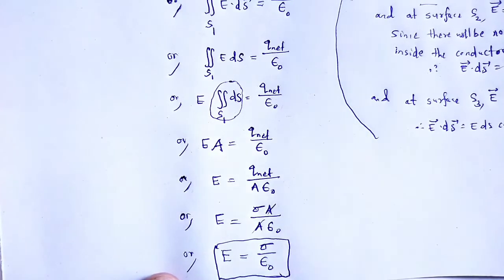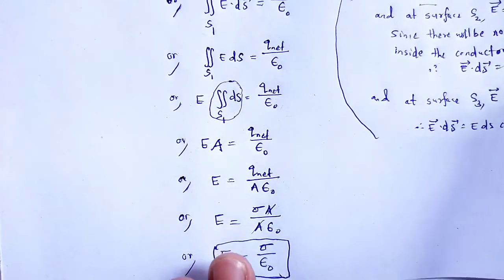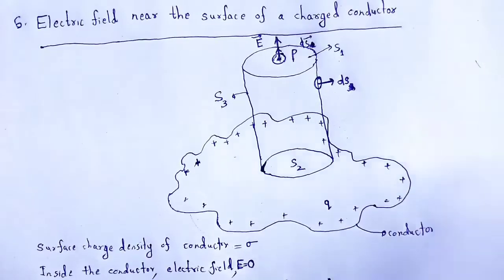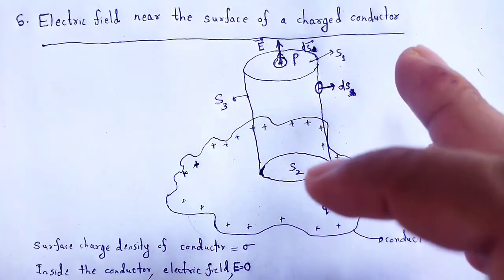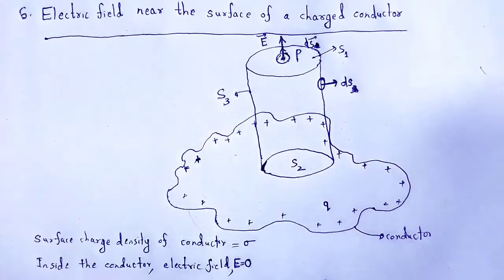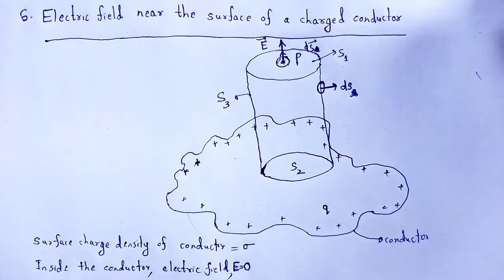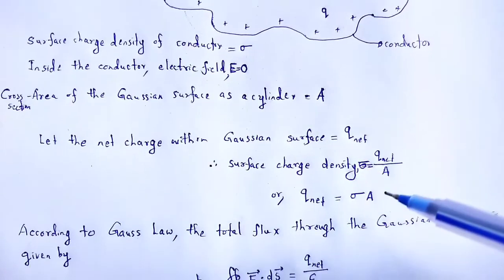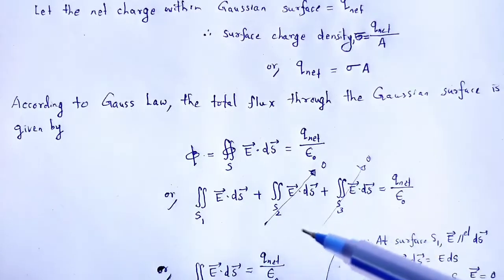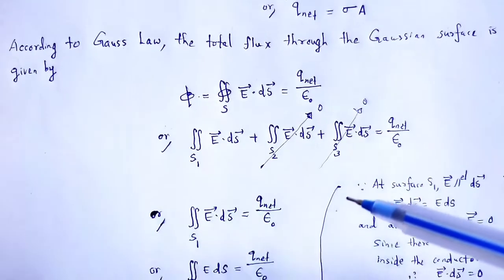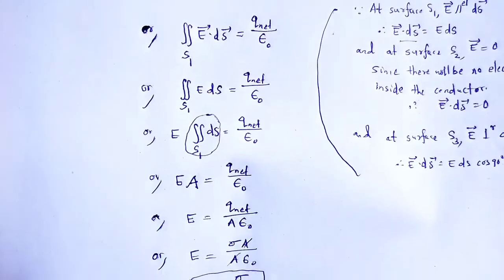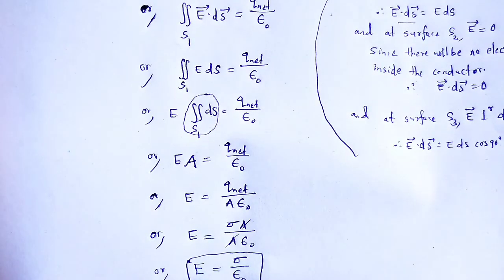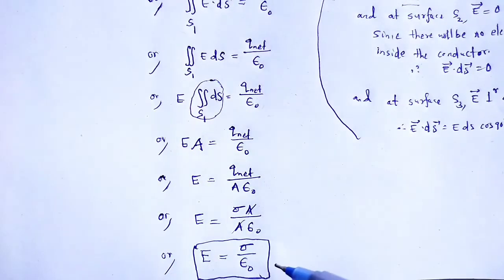That is the required expression. With the help of this derivation, we understand what the electric field near the surface of a charged conductor should be. We derived this equation using Gauss's law. Applying Gauss's law to the Gaussian surface across all three regions, we finally get the expression E equals sigma by epsilon naught. Thank you.